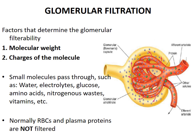Glomerular filterability depends on the molecular weight and charge of the molecule. High molecular weight substances are restricted. Since the basement membrane is highly negatively charged, negatively charged ions are repelled. Small molecules such as water, electrolytes, glucose, amino acids, nitrogenous wastes, and vitamins easily pass through. Note that glucose, though filtered, is 100% reabsorbed in the proximal tubule. Normally, RBCs and plasma proteins are not filtered.